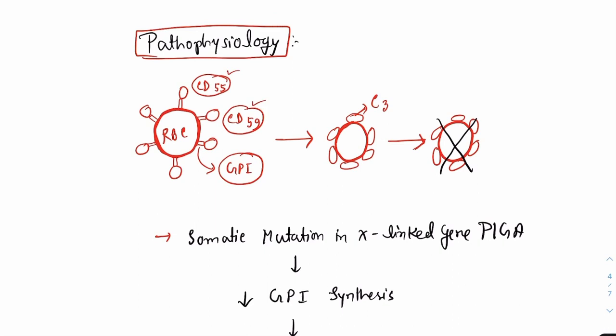But in the absence of CD59 and CD55, the RBCs get opsonized by the complements like C3 and after opsonization they are easily destroyed by the membrane attack complex. The membrane attack complex is the final end product of complement activation.